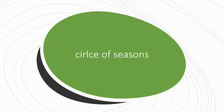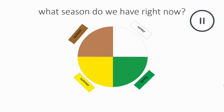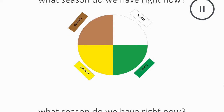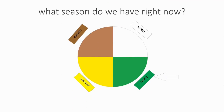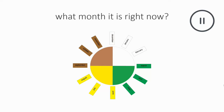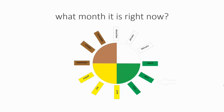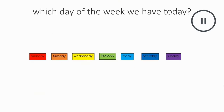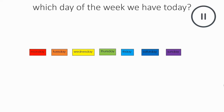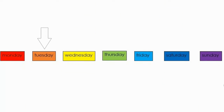Let's work with our circle of seasons. What season do we have right now? Spring. What month do we have right now? April. Which day of the week do we have today? Tuesday.